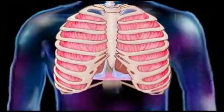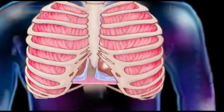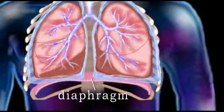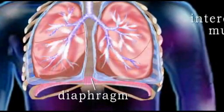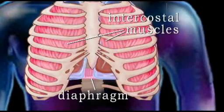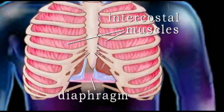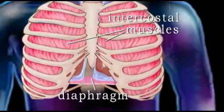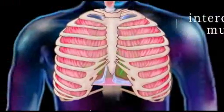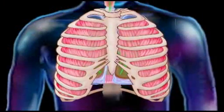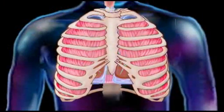Most of our skeletal muscles are under our voluntary control. Even the muscles we use for breathing, such as the diaphragm and the intercostal muscles that lift our ribcage during deep breathing, can be consciously controlled when we choose to do so.